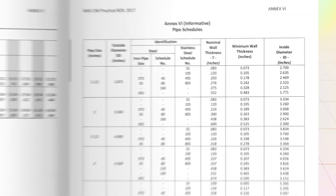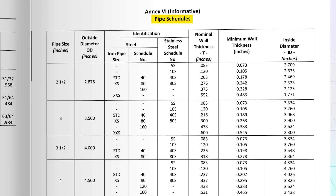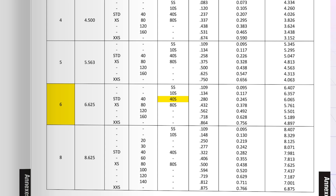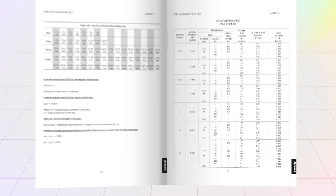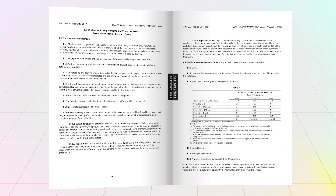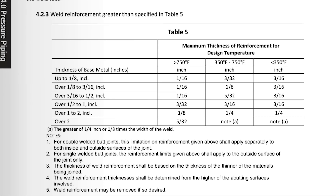First, we need to determine the wall thickness of a 6-inch Schedule 40 pipe. Go to the book of specs, turn to page 47, and refer to the pipe schedule chart. Locate the correct pipe size and match it with the appropriate schedule — for 6-inch Schedule 40, the nominal wall thickness is 0.280 inches. Now find the row in Table 5 that corresponds to that thickness; it falls into the third row, over 3/16 inch to 1/2 inch. The design temperature between 350 and 450°F puts us in the middle column, giving a maximum allowable root reinforcement of 5/32 inch.